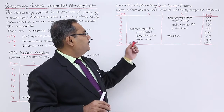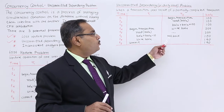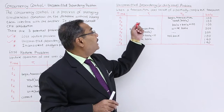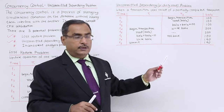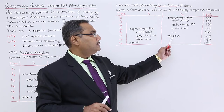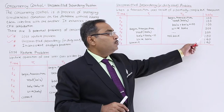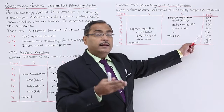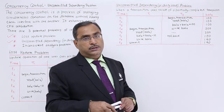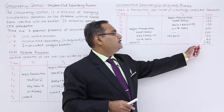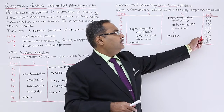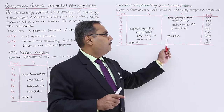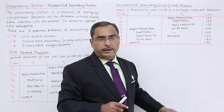Now, at this particular instant T6, a rollback operation has taken place — that is what is known as uncommitted. The balance X value will be rolled back to its initial value, which was 100. So now balance X value has become 100 again. For that instant it was 200, but due to the rollback it has reverted to 100.